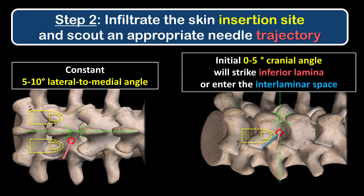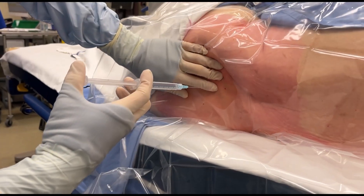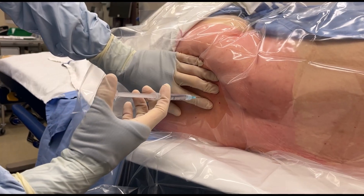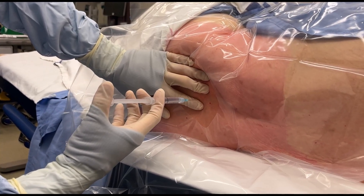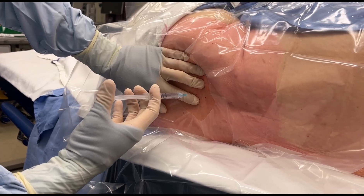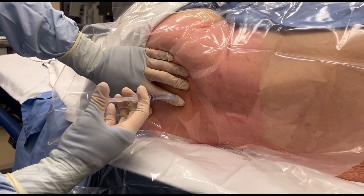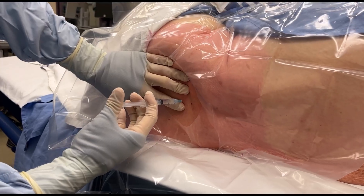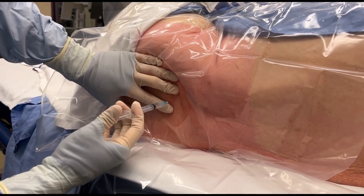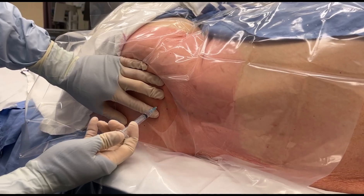This ensures that any initial bony contact will be with the lower lamina bordering the interspace rather than the upper lamina, in which case incremental cranial redirection will inevitably walk the needle tip into the space. Infiltrate local anesthetic to anesthetize the skin, then insert the needle deeper and inject more to anesthetize the paraspinal muscles. Any firm resistance to needle advancement or injection indicates the tip may be within the midline supraspinous or interspinous ligaments, meaning the trajectory is too close to the midline or the lateral to medial angle is too large. The infiltration needle can also be used to explore the area.